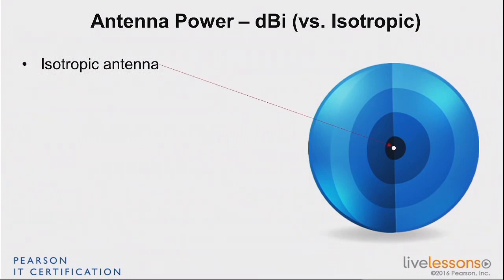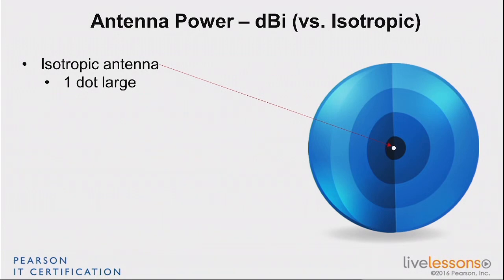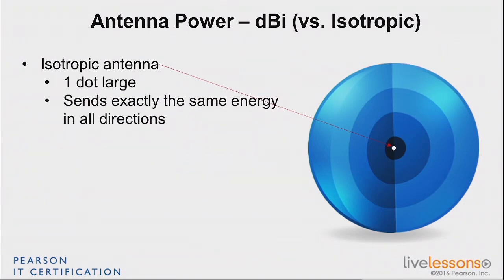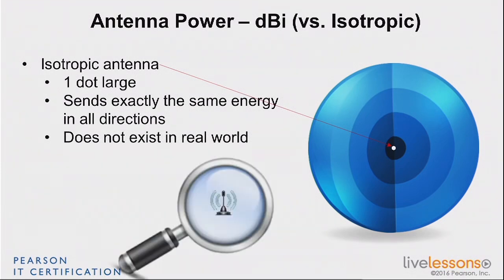The isotropic antenna radiates exactly the same way in all directions in a sphere. It does not exist in the real world. Why? Because we can't make things that are one dot large — even one atom is more than a dot and has a measurable size. Also, sending the same energy in all directions is not something we can do, because you have to make the antenna out of some material and bring energy into it. Just by the physical structure of the antenna, there will be some places where you are not radiating the same way as others.